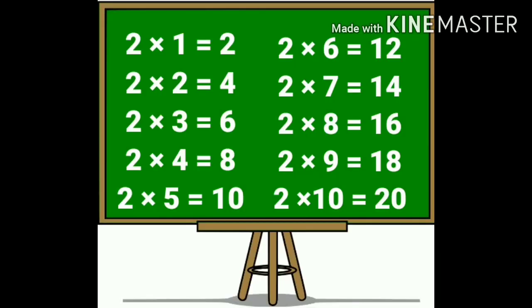2 ones are 2. 2 twos are 4. 2 threes are 6. 2 fours are 8. 2 fives are 10. 2 sixes are 12. 2 sevens are 14. 2 eights are 16. 2 nines are 18. Two tens are twenty.